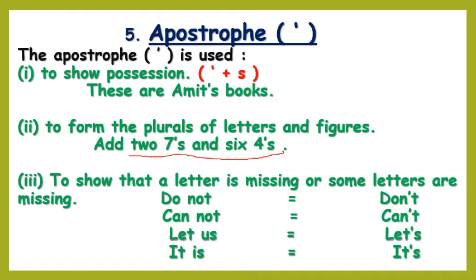The apostrophe is also used to show that a letter or letters are missing — it is placed where letters have been removed. For example: 'do not' can be written as 'don't' — D-O-N apostrophe T. The O is missing and in its place we use an apostrophe.